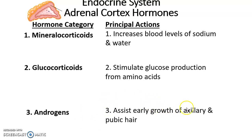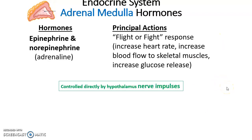The third category is androgens. Androgens are sex hormones that assist in the early growth of axillary and pubic hair, so they come into play at the beginning of puberty. They also have a role back when we were an embryo.